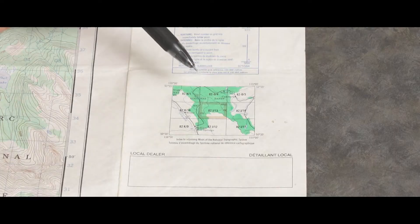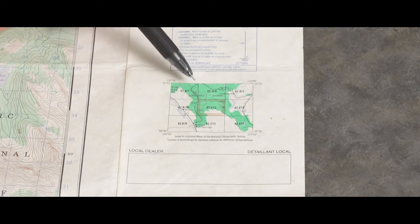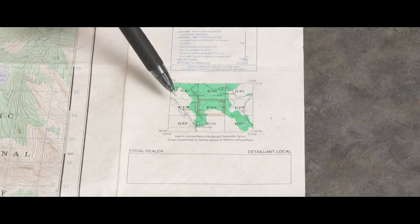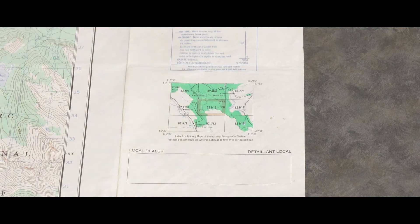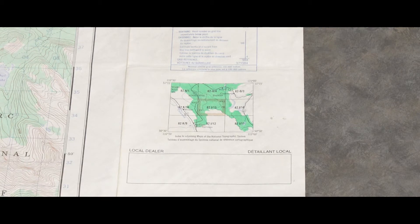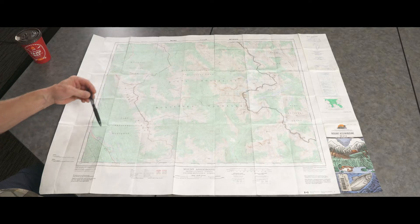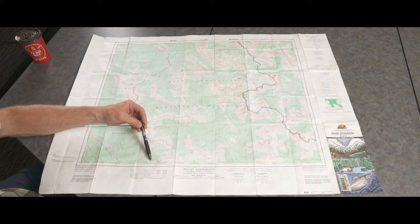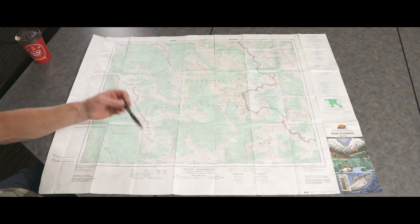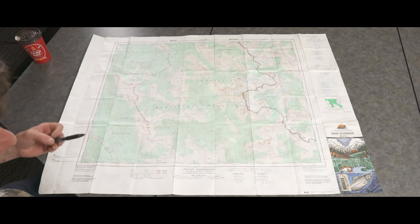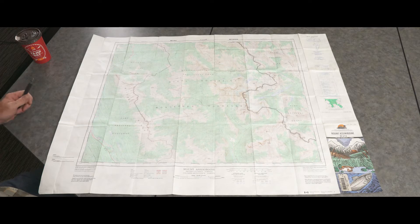If we look over here on the right side, you can see there's a grid of nine squares. Each of those squares is a map sheet, and this present map sheet — the Mount Assiniboine map — is shown in the middle, so you now know what all the adjoining maps might be. If you're doing a trip right on the very edge, you can be prepared with that particular map sheet.